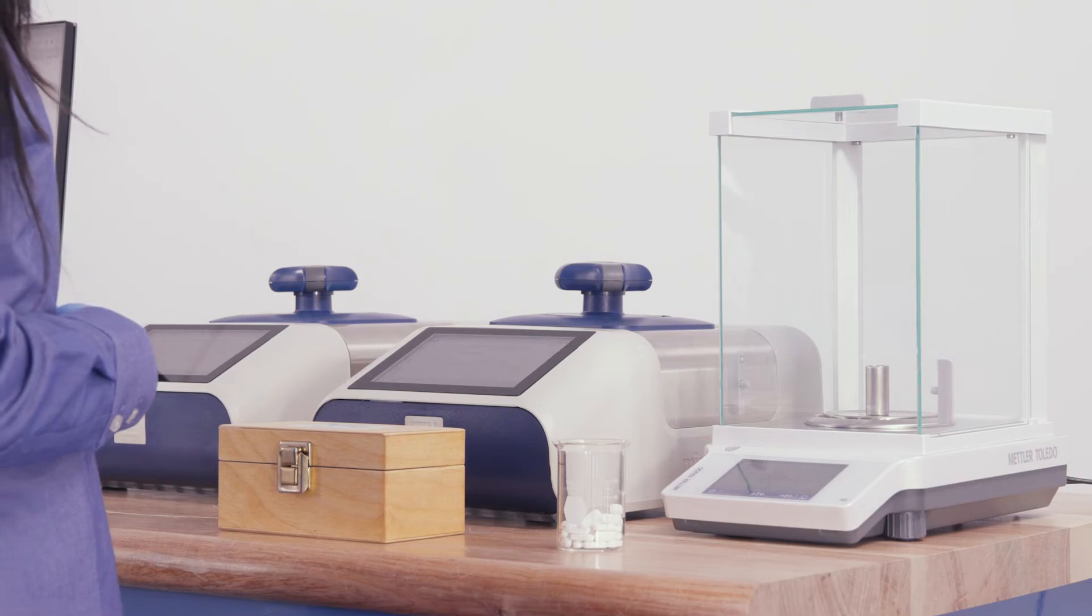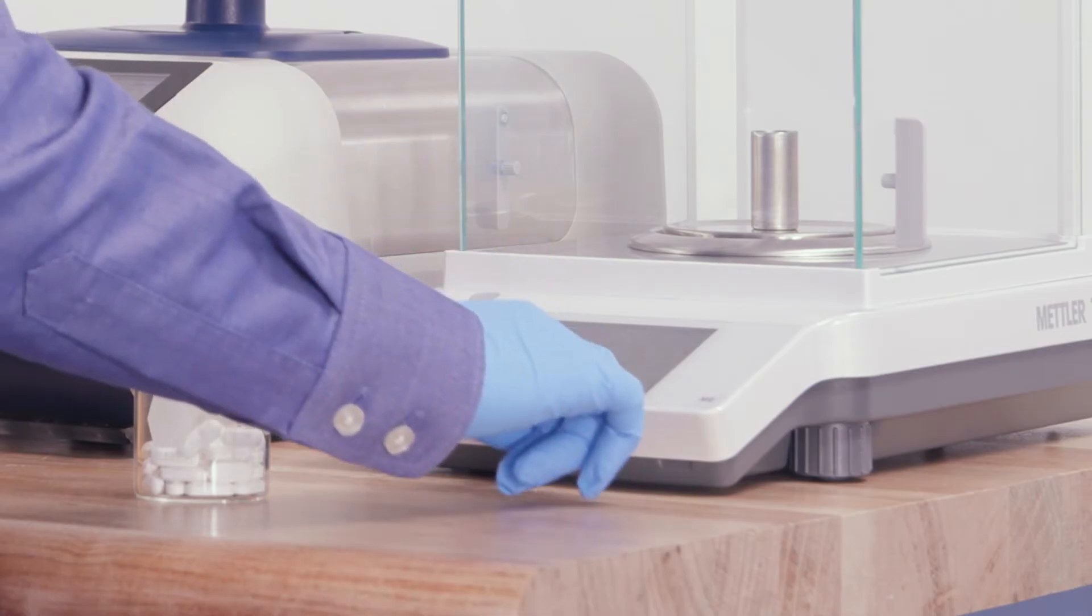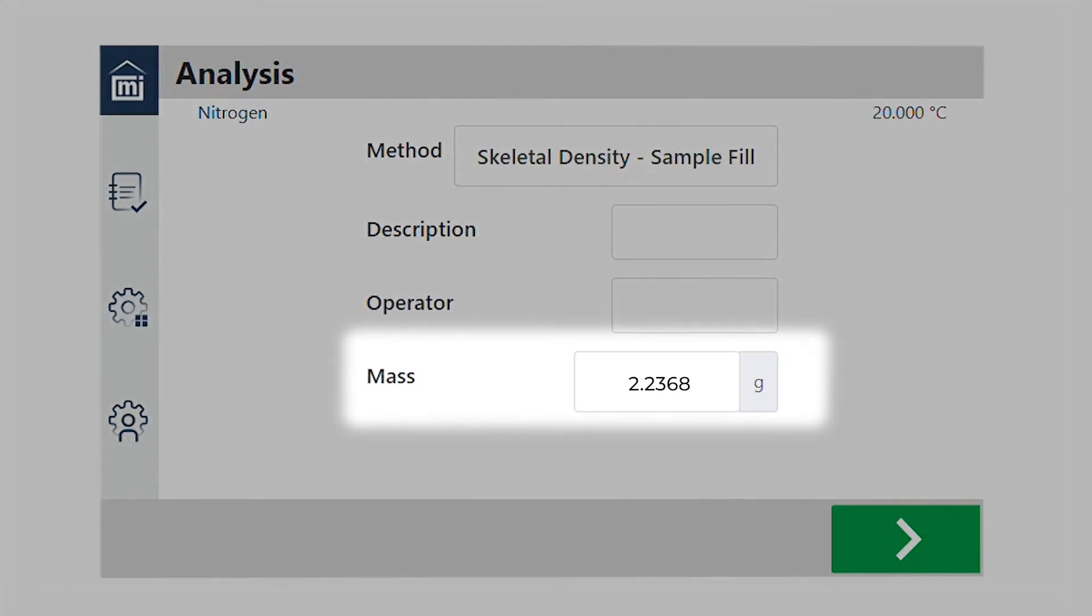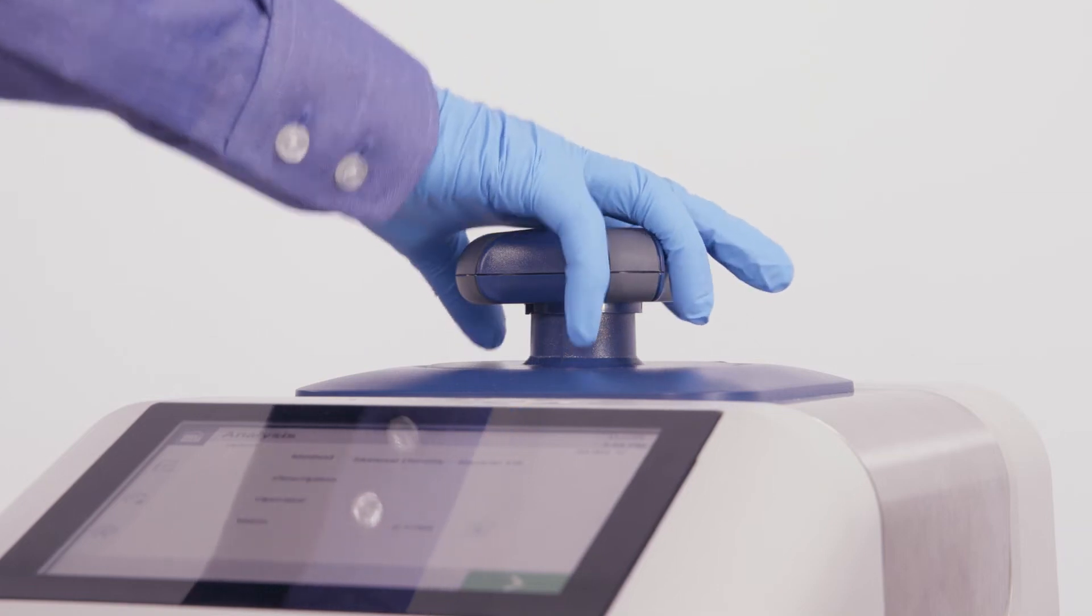The AccuPIC can be connected directly to the balance to make the transferring of mass easy. Just click the transfer button on the balance and the mass is transferred. Now that we have weighed the sample, we can place the cup into the chamber.